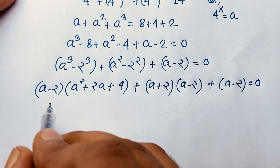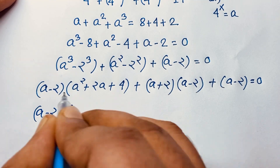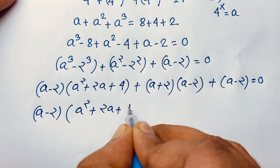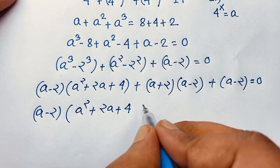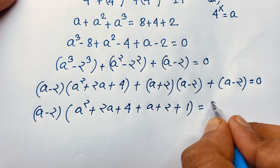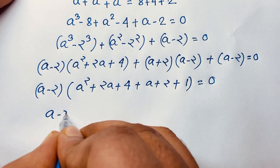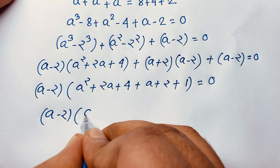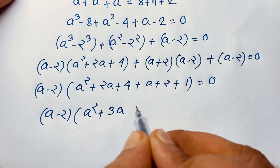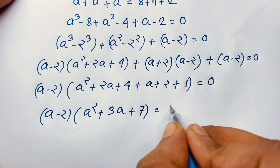Now (a minus 2) is a common factor. Taking it out: (a minus 2) times [(a squared + 2a + 4) plus (a + 2) plus 1] equals 0. Simplifying inside: a squared plus 3a plus 7 equals 0.